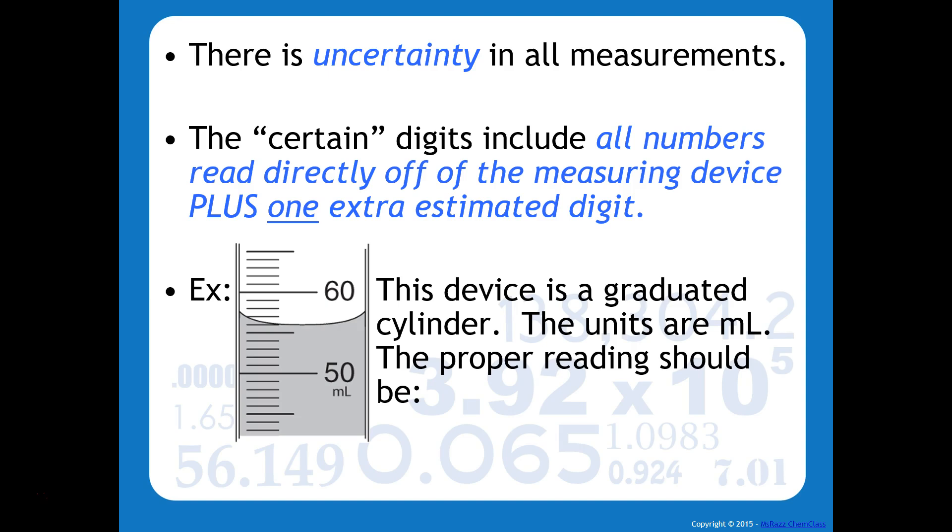For example, you can see that each of these intervals represent the ones place. So we can all agree that this measurement, we're going to take a look at the meniscus down here, but this measurement is definitely going to be 56.